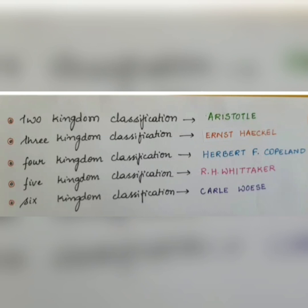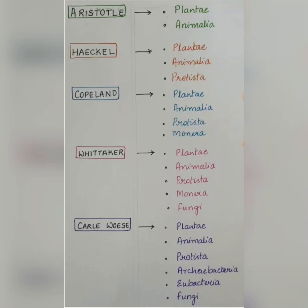Aristotle's two kingdom classification includes Plantae and Animalia. Ernst Haeckel's three kingdom classification includes Plantae, Animalia, and Protista. Copeland's four kingdom classification includes Plantae, Animalia, Protista, and Monera. Whittaker's five kingdom classification adds Fungi. Carl Woese's six kingdom classification includes Plantae, Animalia, Protista, Archaebacteria, Eubacteria, and Fungi.